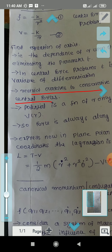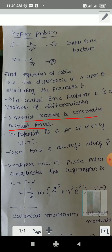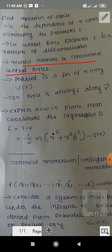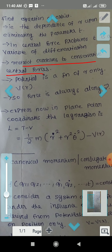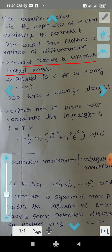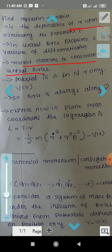In this case, we will consider the Kepler problem and do the equation of orbit. The equation of orbit means we will consider R and Theta — that is, polar coordinates. The equation of orbit is the dependence of R upon Theta, eliminating the parameter T.